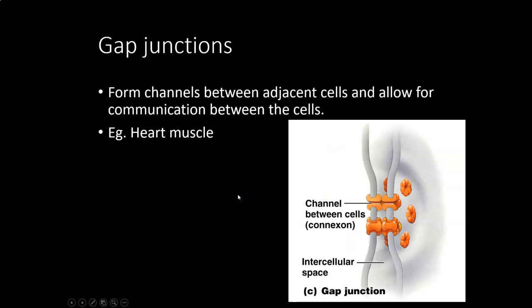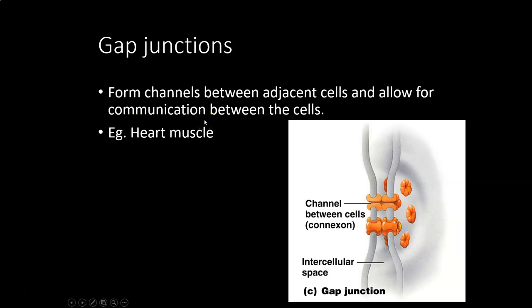Gap junctions are a more specialized type of junction. The connection creates a channel that links the two cells together — sort of like an elevator shaft — so if something happens inside one cell, it can relay a signal to the next cell. The key word for a gap junction is communication. Cardiac muscle cells are held together with gap junctions, and that is critically important for heart function.